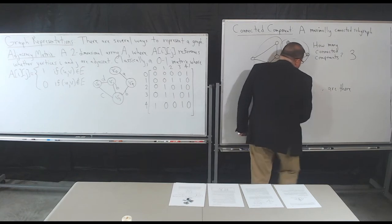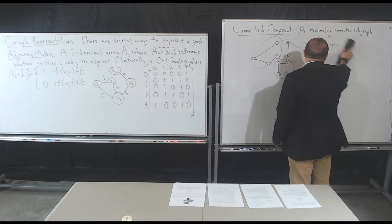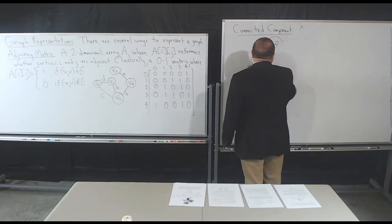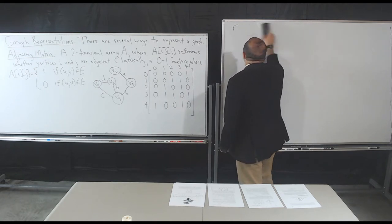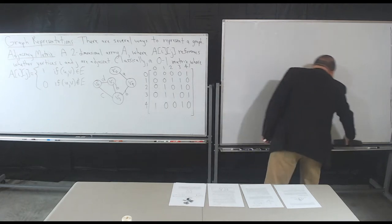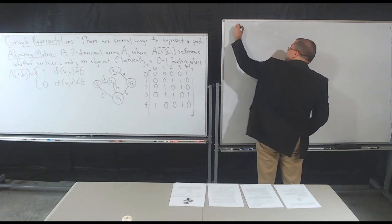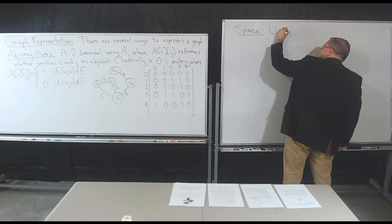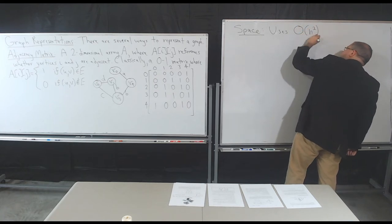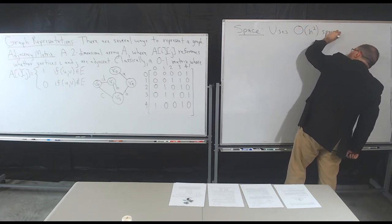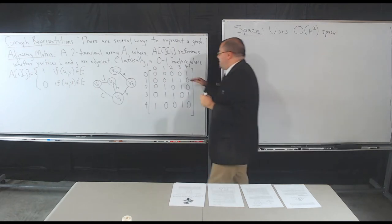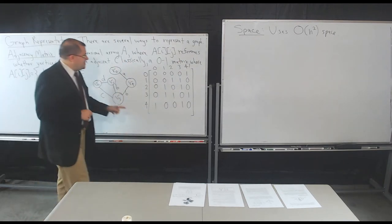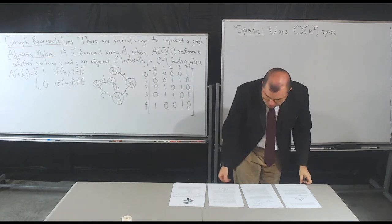Let's talk about properties of the adjacency matrix. While I'm erasing, think about how much space this matrix occupies in terms of the number of vertices. How much space does this adjacency matrix use? It uses O(N²) space, because I have an N-by-N matrix — quite natural.